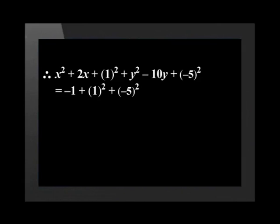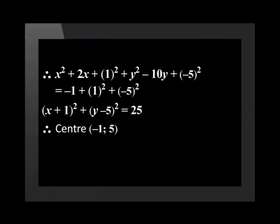We've done steps 1 and 2 of completing the square. Now let's do step 3: factorizing. Remember the trinomials are always perfect square trinomials, which means they have two brackets that are exactly the same. When we have factorized we have (x plus 1) squared plus (y minus 5) squared equals 25. Therefore the coordinates of the center are (negative 1, 5) and the length of the radius is the square root of 25, which equals 5.